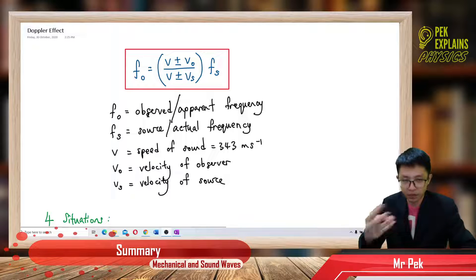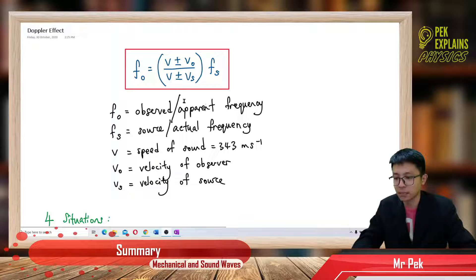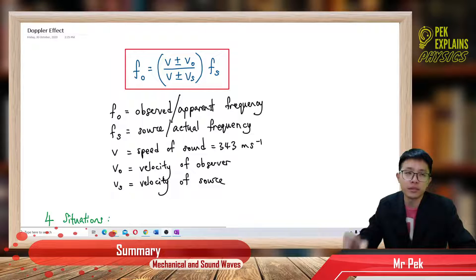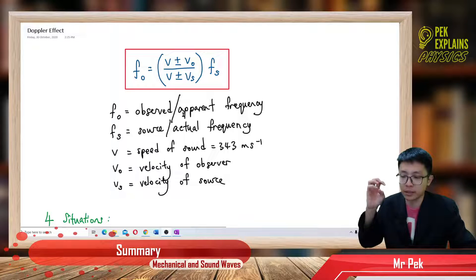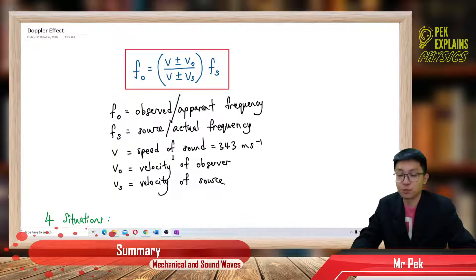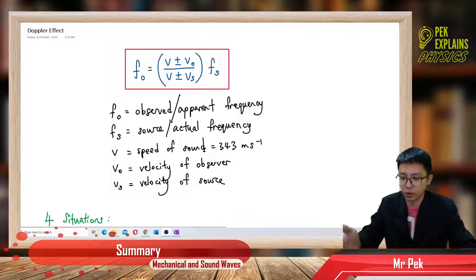f₀ is the observed frequency, also called apparent frequency — both names have the same meaning. fs is the source frequency, or the actual frequency actually emitted from the source. The observed frequency is the frequency that is heard by the observer, not the frequency emitted. v is the speed of sound, which is constant — normally given as 343 meters per second.